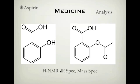IR spectroscopy is probably the most important way of differentiating between these two molecules. IR spec looks at functional groups, and the major difference is that salicylic acid has one C=O group, while aspirin has two C=O groups. In IR spec, you'd expect one peak at around 1700 cm⁻¹ for salicylic acid, and two peaks at around 1700 cm⁻¹ for aspirin. So IR spec is a really good way of differentiating between the two — you can quickly see the difference in the number of C=O stretch peaks at about 1700.